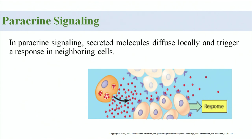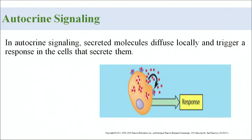In paracrine signaling, secreted molecules diffuse locally and trigger a response in neighboring cells — those near the cells that secreted them.